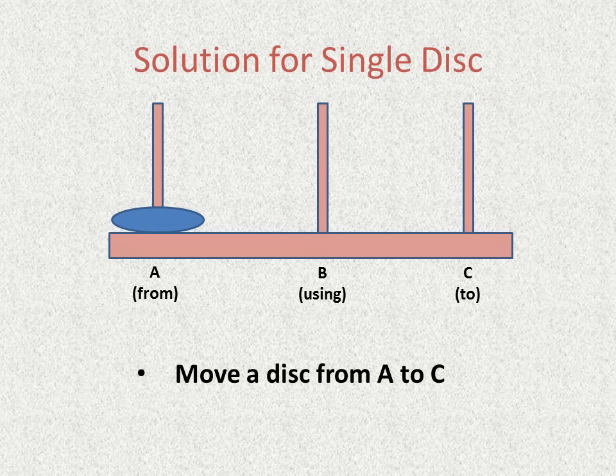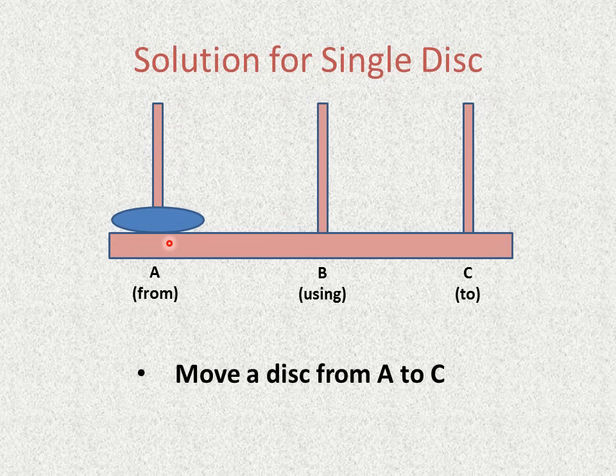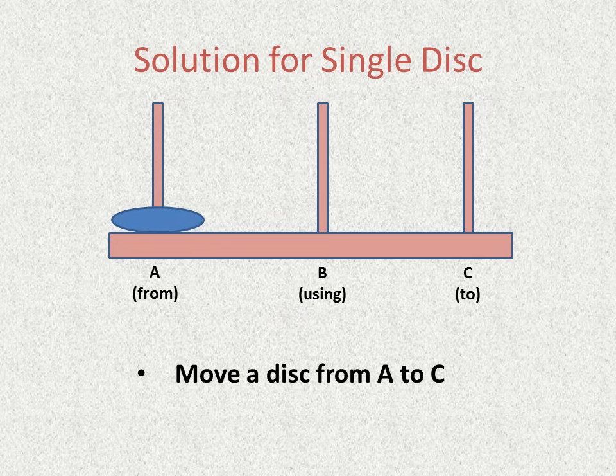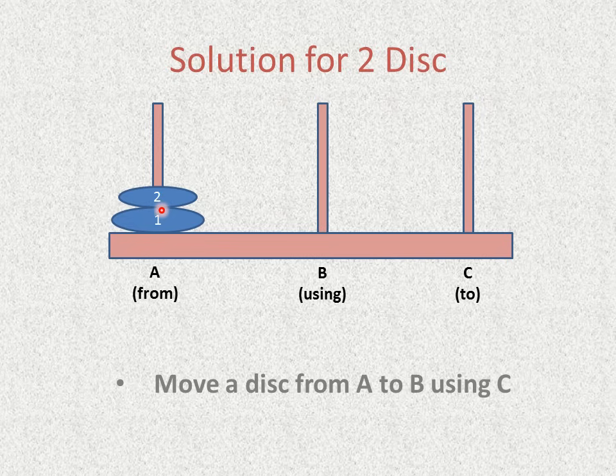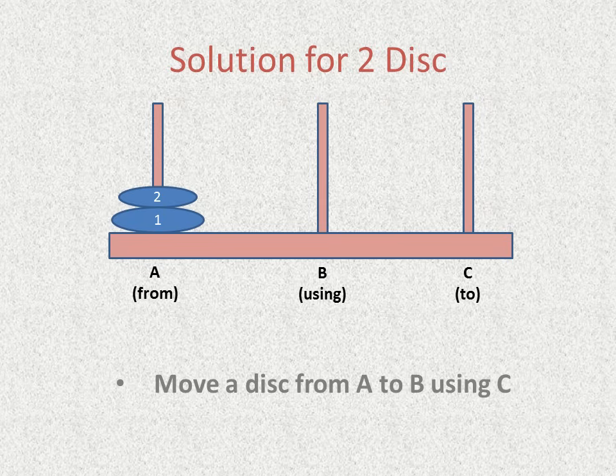By taking a small example. I am taking an example with a single disc. Suppose there is only a single disc given in the tower. Then the solution is very easy. Move a disc from Tower A to Tower B. As we are not moving into destination tower, we are moving into an auxiliary tower that is intermediate tower B. So I have written the statement like this. Move a disc from Tower A to B using C.